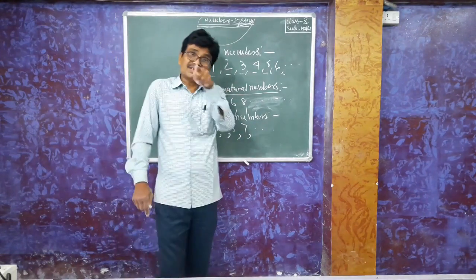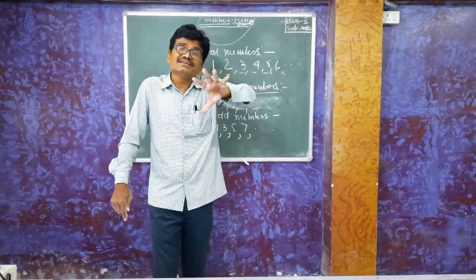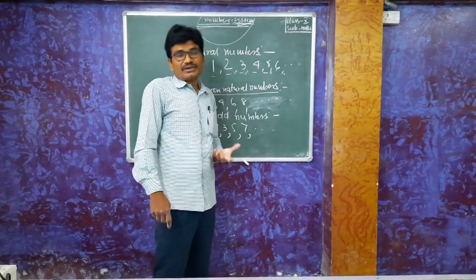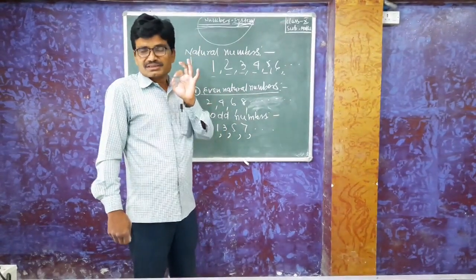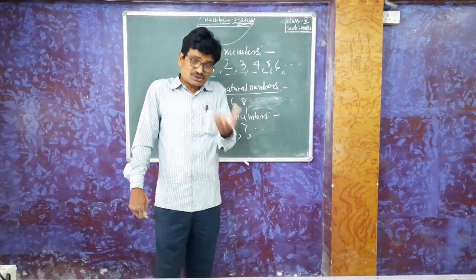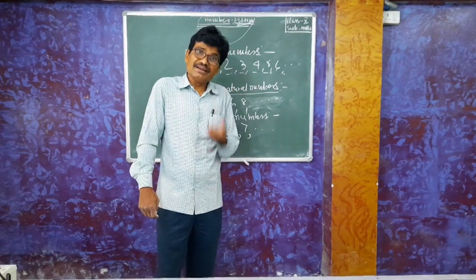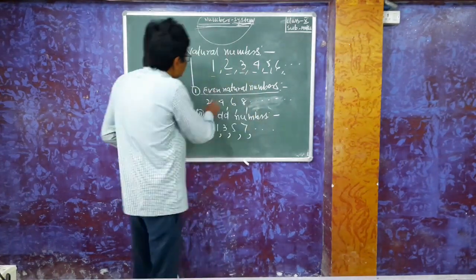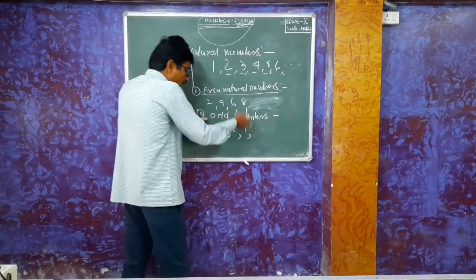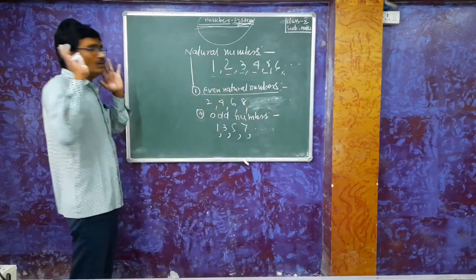Whenever we say numbers which are completely divided by 2, the other numbers are called even numbers. But according to my understanding, it is not entirely right because minus 2 is also divided by 2. So minus 4 is not an even number, minus 6 is not an even number. Here 2, 4, 6, 8 and so on only are known as even numbers, and odd numbers are 1, 3, 5, 7 and so on only.